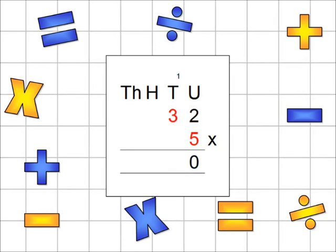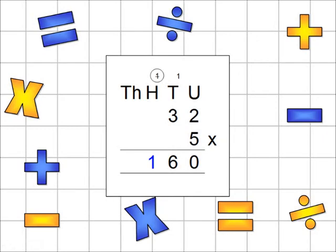Next, look at the 3 in the tens column and the 5 in the units column. The answer to this is 15, although because you are using 30 rather than 3, the true answer is 150. The 5 goes into the tens column. The 1 goes above the H in the hundreds column. But you also need to add the 1 which is above the T in the tens column to the 5, making 6. For the final part of the question, you need to add the 1 which is above the H in the hundreds column to the other numbers in the hundreds column. As there are no other numbers in the hundreds column, the answer is 1 — or 100, as it's in the hundreds column. The question is finished, and the answer is 160.